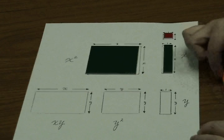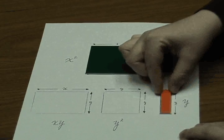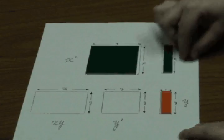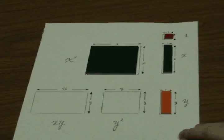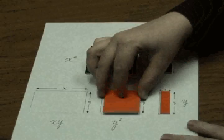Now we introduce a new tile, which represents y. The width is 1, and the length is y. Similarly, there is a y squared tile.